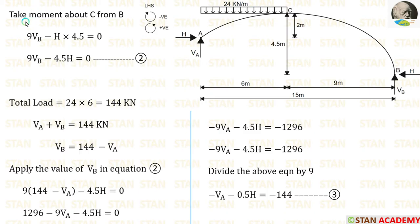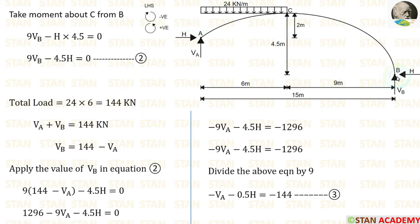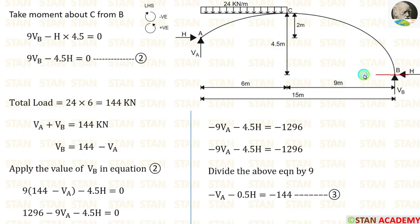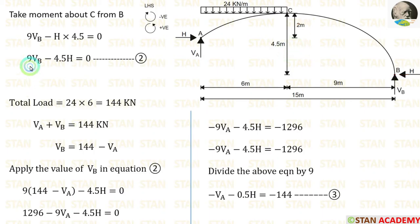Taking moment about C from point B, moving towards the left-hand side: clockwise is negative, anticlockwise is positive. VB acts anticlockwise over 9 m, giving +9·VB. The horizontal thrust H acts clockwise over height 4.5 m, giving −H×4.5. This gives Equation 2.